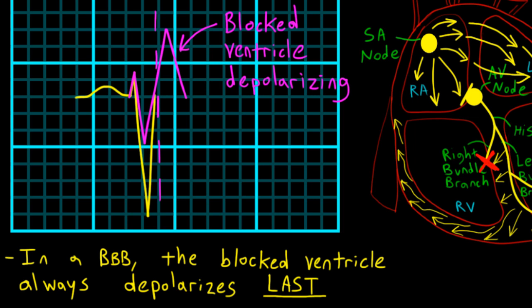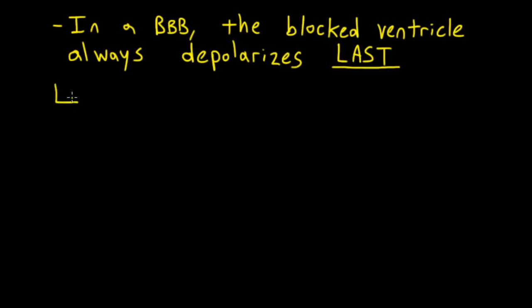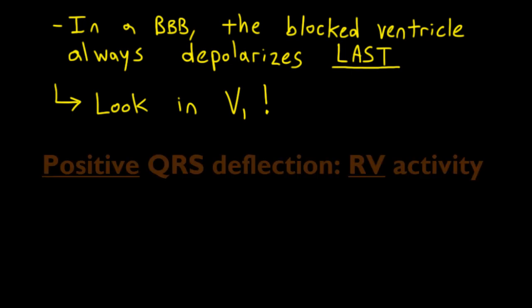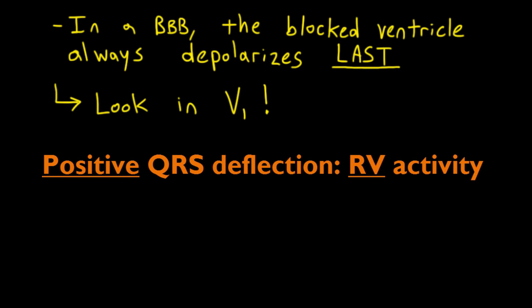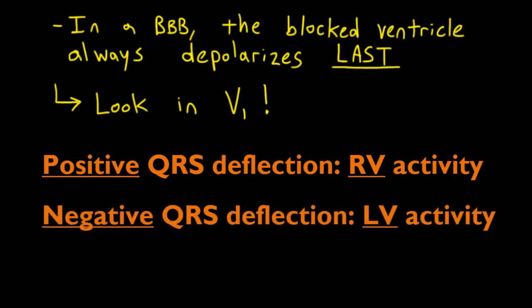To figure out if a wide QRS complex represents a right or left bundle branch block, all you have to do is figure out which ventricle is depolarizing at the end — this is the concept behind the terminal QRS vector. The best lead to look in is lead V1, located on the right side. Because the right ventricle sits anteriorly underneath V1, a positive QRS deflection in V1 tells you you're looking at right ventricular depolarization. A negative deflection in V1 indicates left ventricular depolarization, since the left ventricle has more mass oriented more posteriorly.